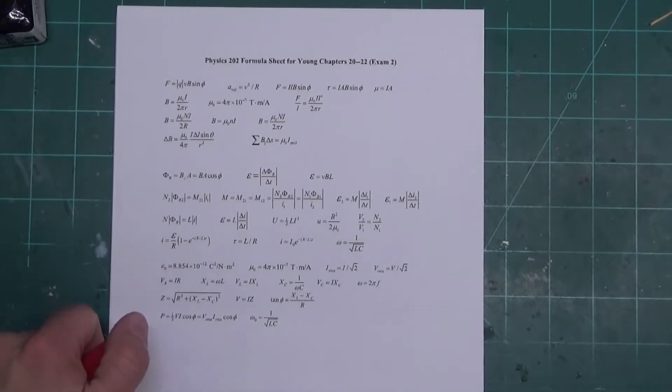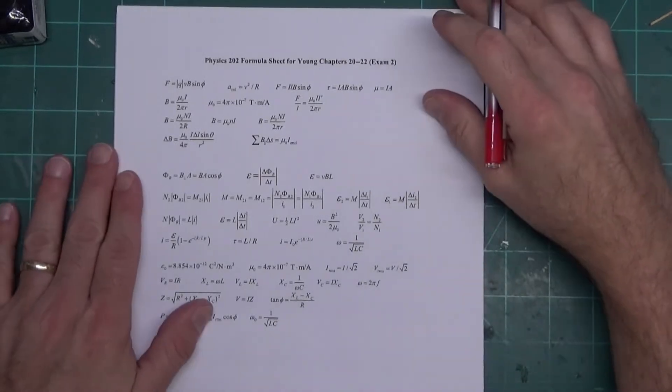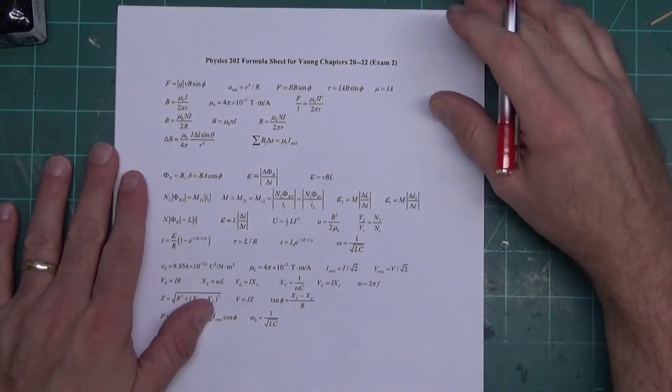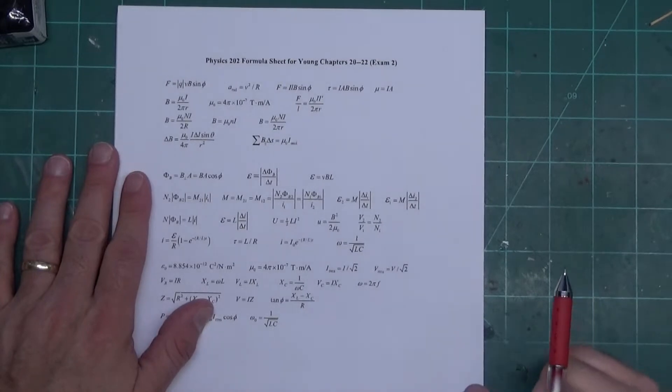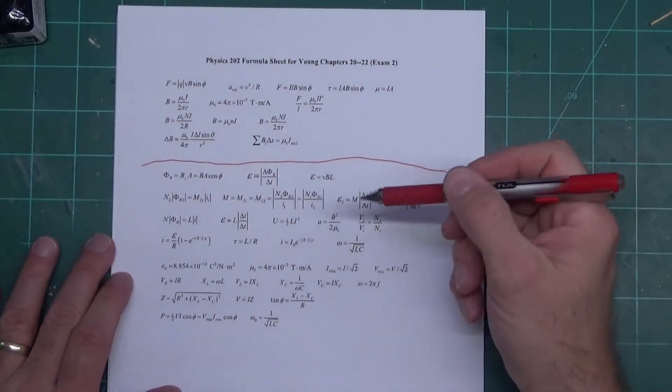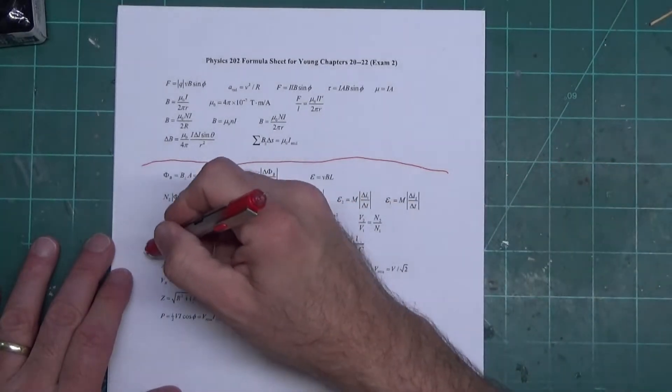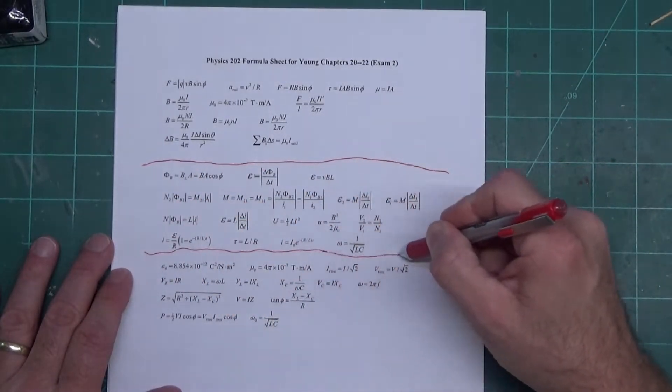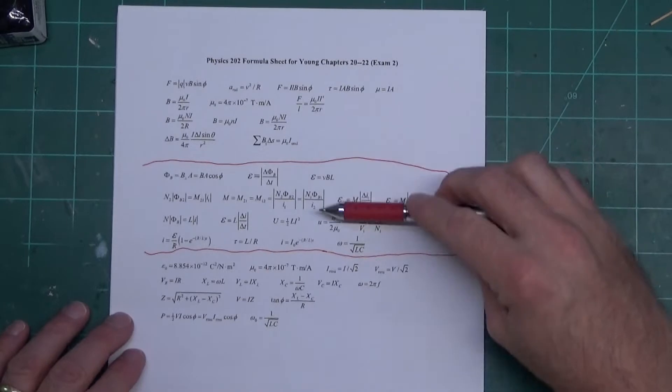Hello everyone, we're going through the exam 2 formula sheet for physics 202. Your test is coming up and it would be good to take a look at this formula sheet. First off, he does have it broken up by chapters, so I'm going to draw lines breaking these up by chapters. There we go - first chapter, second chapter, third chapter down here.